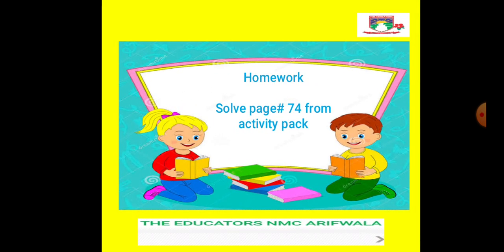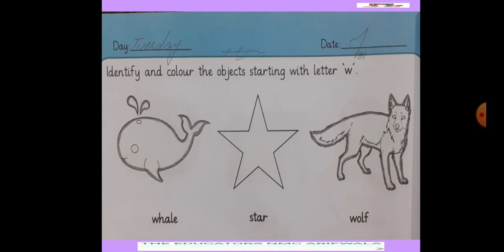Now your homework, homework page number 74 from the activity pack. Day write, homework write and class date, identify and color the objects starting with letter W.